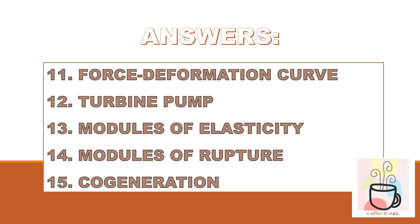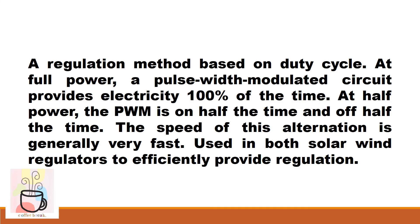A regulation method based on duty cycle. At full power, a pulse width modulated circuit provides electricity 100% of the time. At half power, the PWM is on half the time and off half the time. The speed of this alternation is generally very fast, used in both solar and wind regulators to efficiently provide regulation.